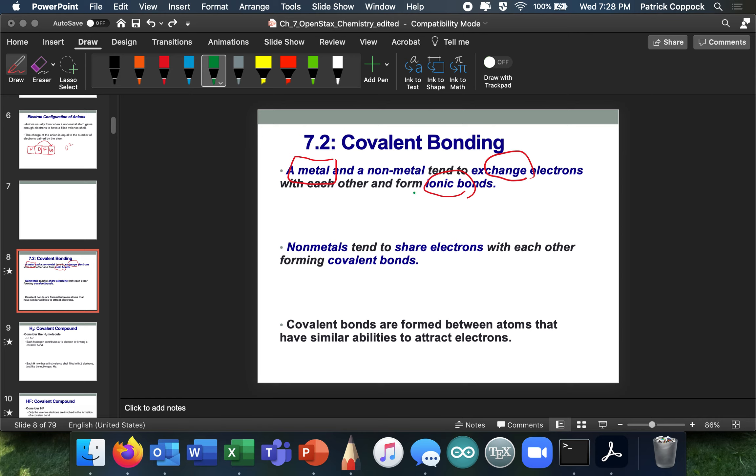So a metal and a non-metal tend to exchange electrons with each other and form ionic bonds. Non-metals tend to share electrons with each other, forming covalent bonds.